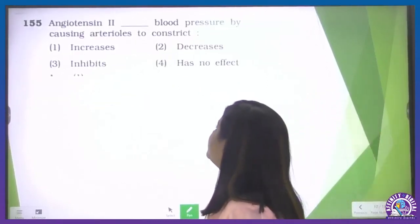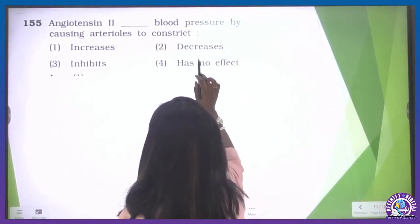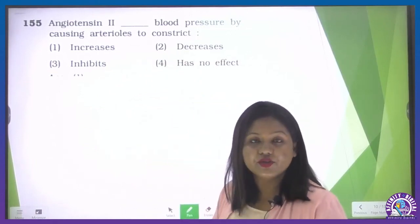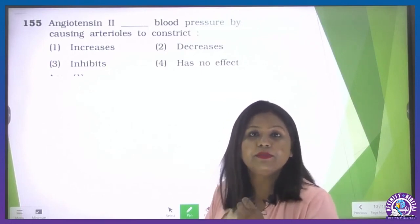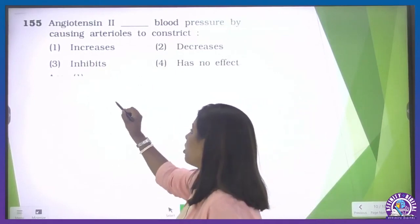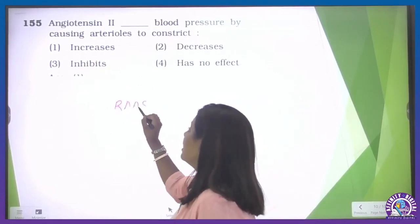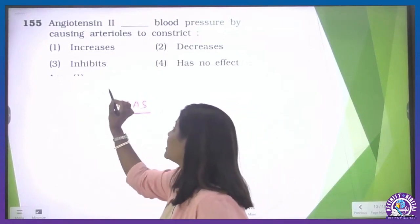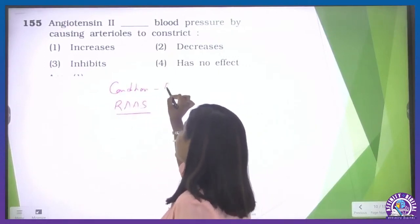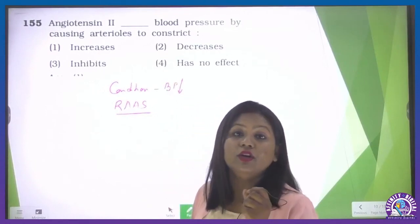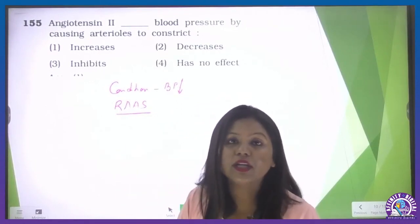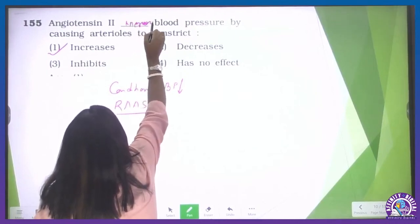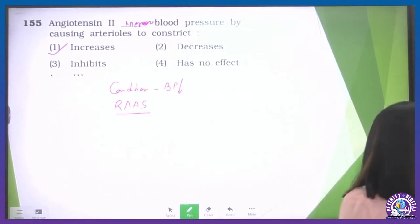Angiotensin 2 — what does it do? It increases blood pressure by causing the arterioles to constrict. When arterioles constrict, blood pressure increases. Angiotensin 2 is part of the RAS mechanism — renin-angiotensin-aldosterone system — and this operates when blood pressure is low. When blood pressure in our body is low, this system operates and blood pressure becomes high. So angiotensin provides relief by increasing blood pressure. Option 1 is correct.